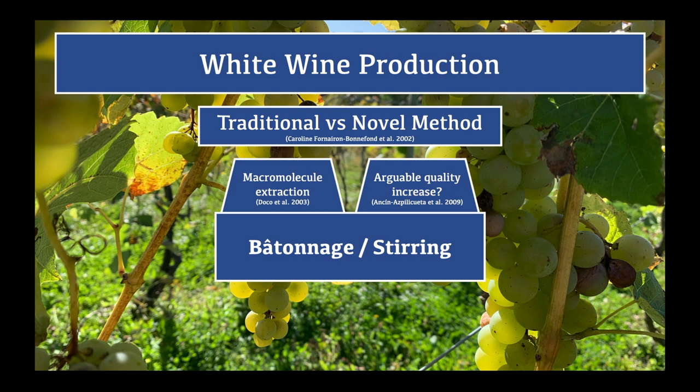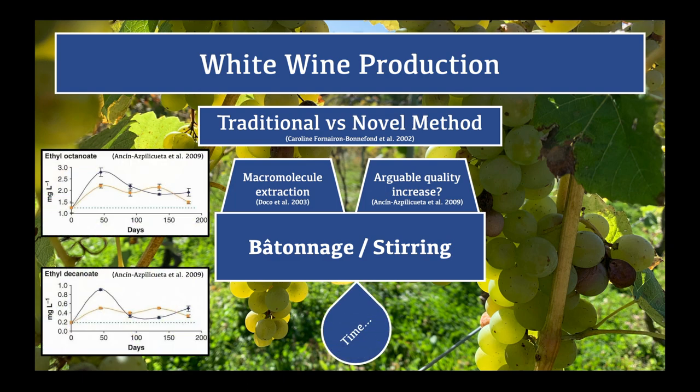A 2009 study found that stirring had practically no effect on the esterification or ester hydrolysis reactions. Total esters were actually higher in the non-stirred Chardonnay, though not in a statistically significant manner for most of the time. The length of aging on lees is clearly a crucial factor. For example, ethyl decanoate and ethyl octanoate — both of which give off fruity aromas — are at significantly higher concentrations in the unstirred wine than the stirred wine at 50 days. Ethyl octanoate is 1.2 times higher and ethyl decanoate is nearly twice as highly concentrated.